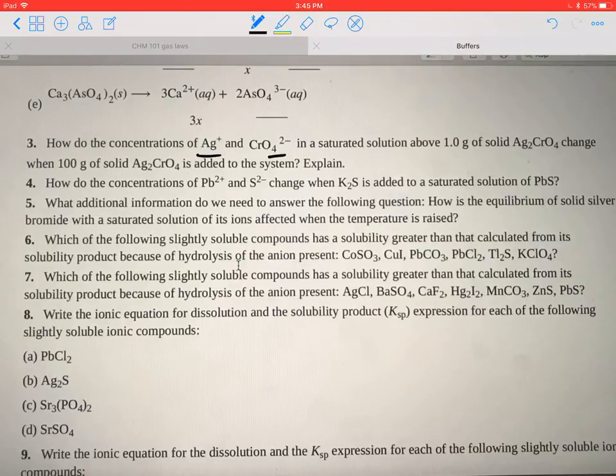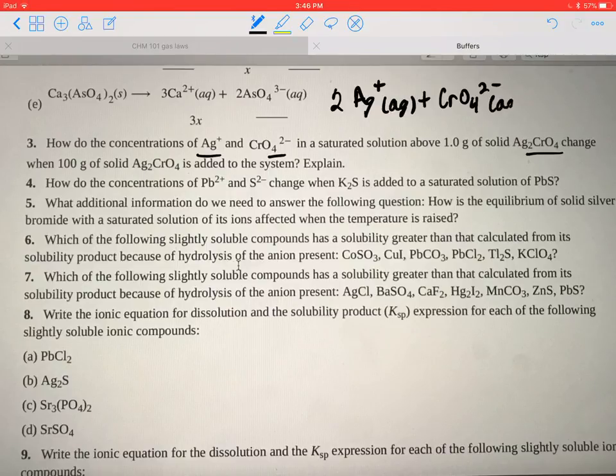So we've got this equilibrium here: Ag+ in equilibrium with two of those, in equilibrium with chromate. And that's in equilibrium with Ag2CrO4 solid.